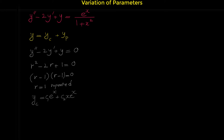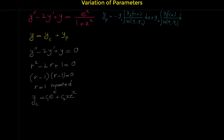For finding the particular solution, we use the variation of parameters formula: y_p equals negative y₁ times the integral of (y₂·f(x) / Wronskian) dx, plus y₂ times the integral of (y₁·f(x) / Wronskian) dx. In this formula, y₁ and y₂ are the two functions from the complementary solution — without the coefficients c₁ and c₂. So y₁ is e^x and y₂ is xe^x.